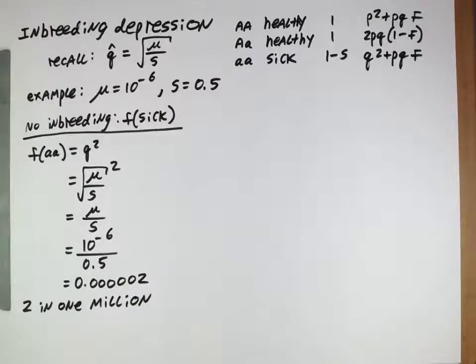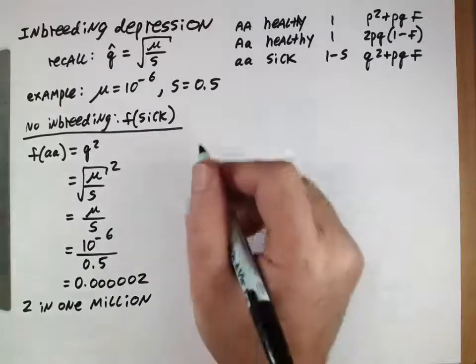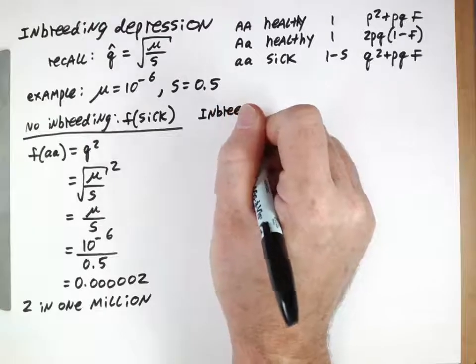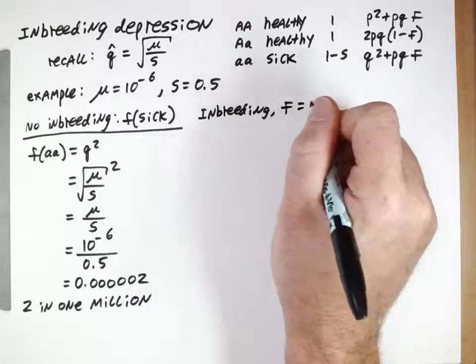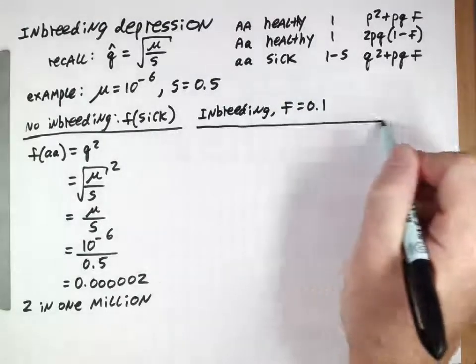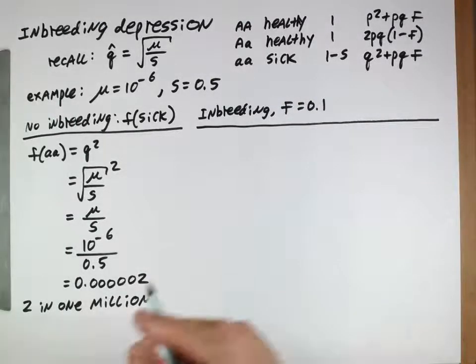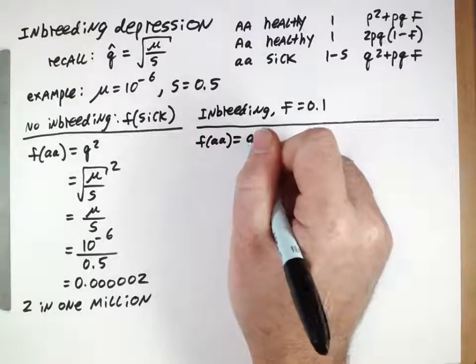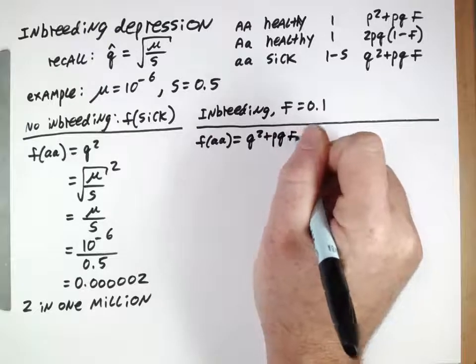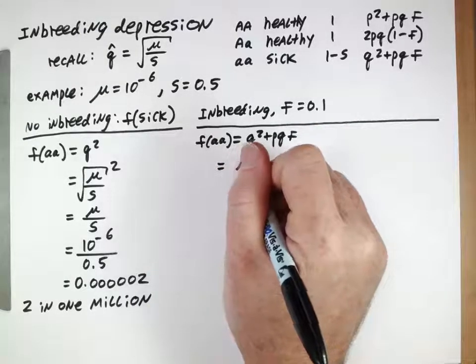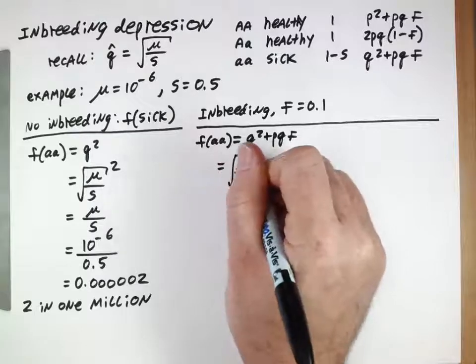Now what about with some inbreeding? Say we'll have an F value of 0.1, just to pick an arbitrary value. Now the frequency of the sick individuals is given by q squared plus pqF.